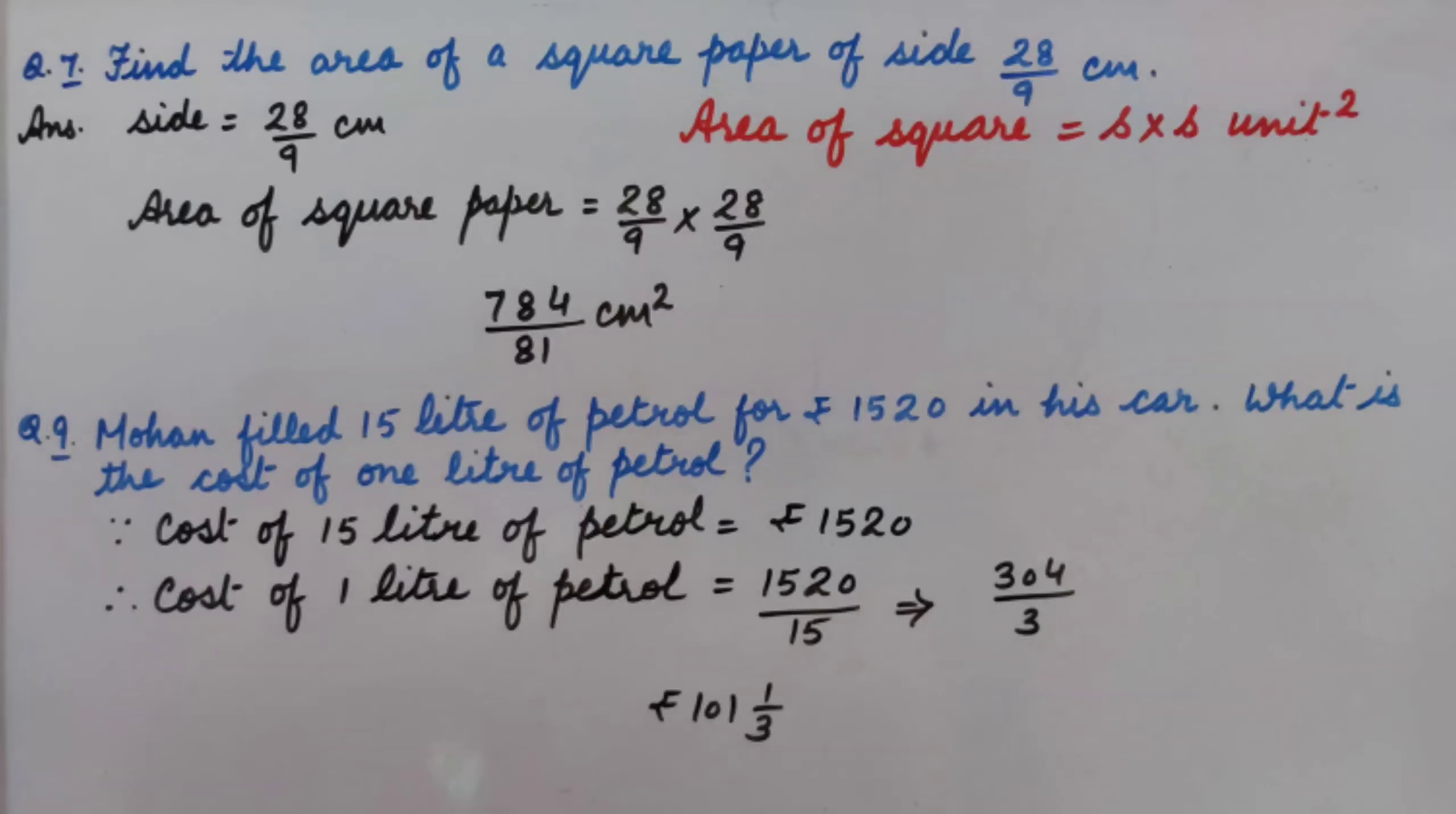Inserting the values of side we get area of square paper is equal to 28 upon 9 multiplied by 28 upon 9. Solving we get 784 upon 81 cm square.